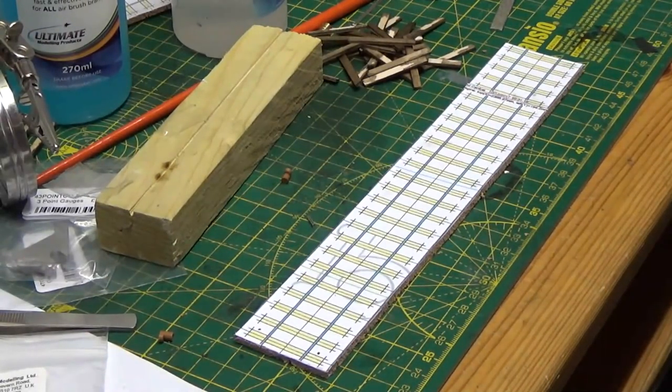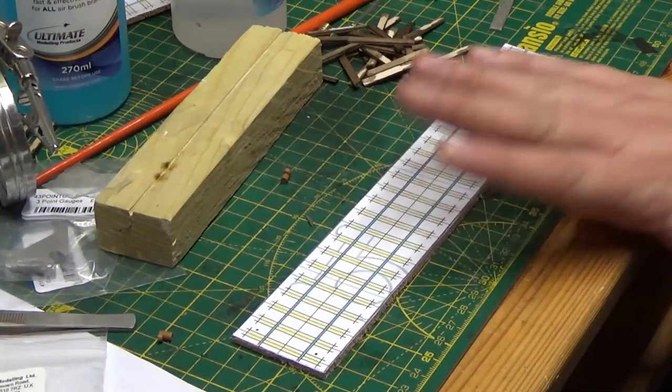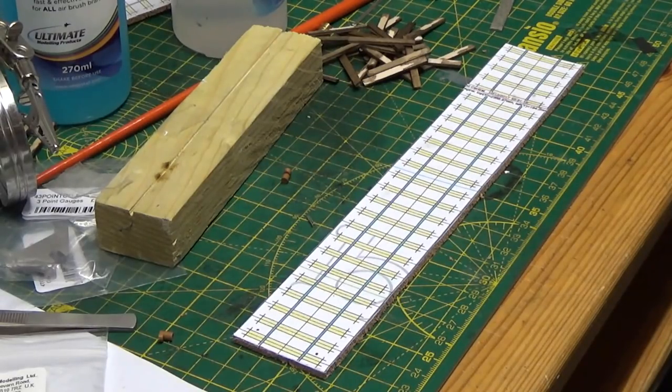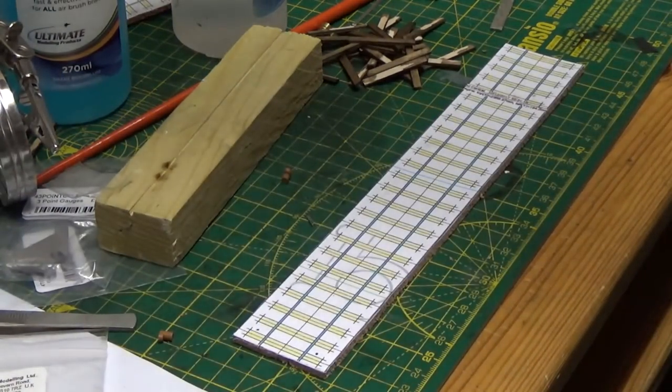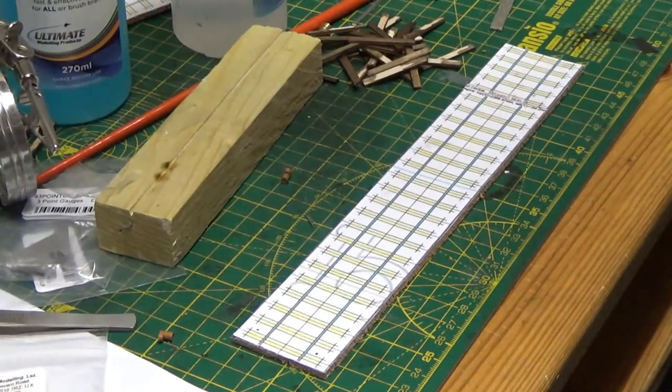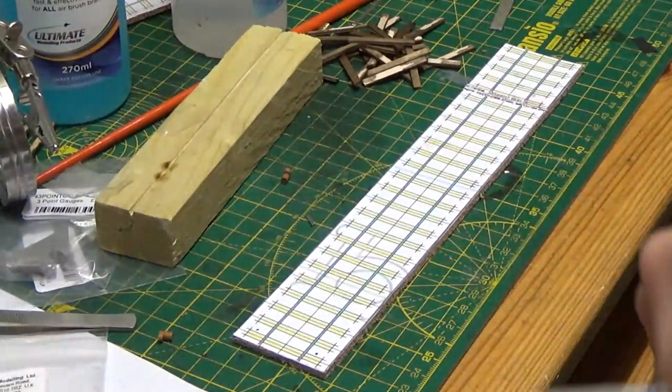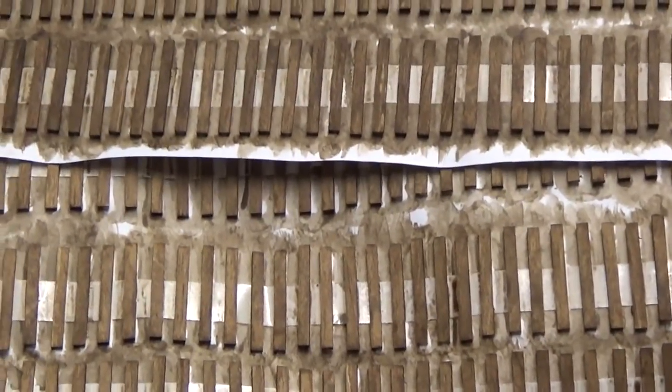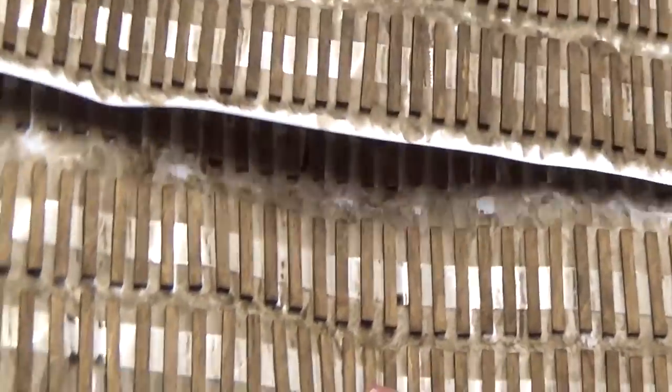Hello everyone, welcome back to making a trap work, part 2. Last time you saw me I was staining my wooden sleepers with some Colron Jacobean Dark Oak wood dye. I've given them a few more coats - that one has had three coats total and that one's had two coats, so you get a bit of variation between them.